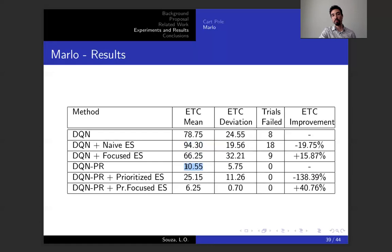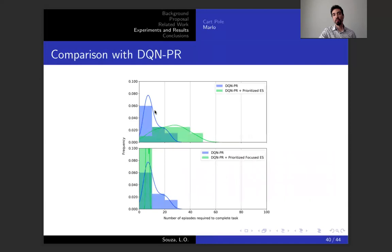Here, the DQN PR performs a lot better than regular DQN—this is prioritized replay. It solves in about 10 to 11 episodes, and when you add the focus aspect of it, you can get it down to six episodes, which is as fast as it can, actually. Here showing the same graphs, you can see the difference.